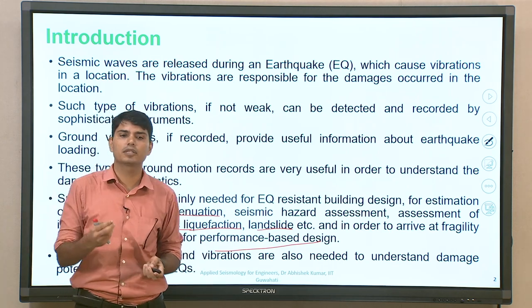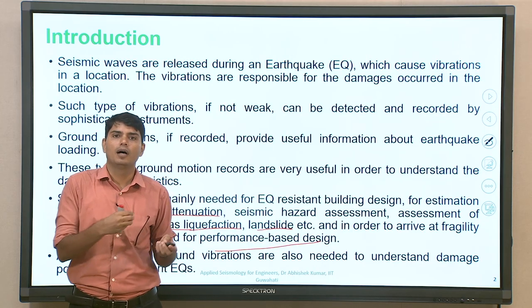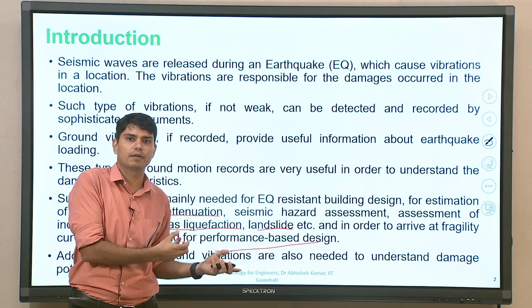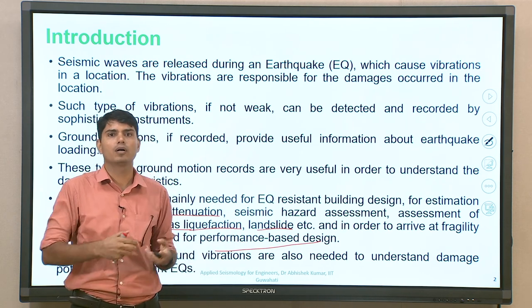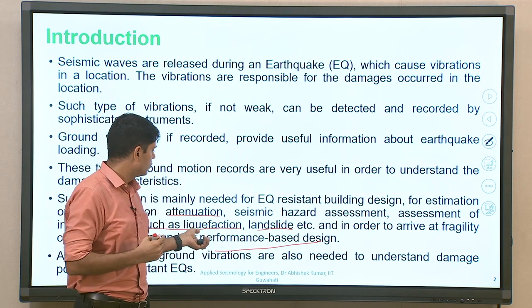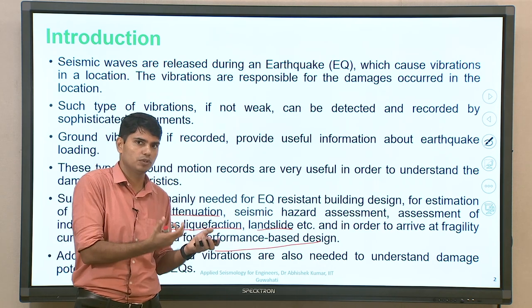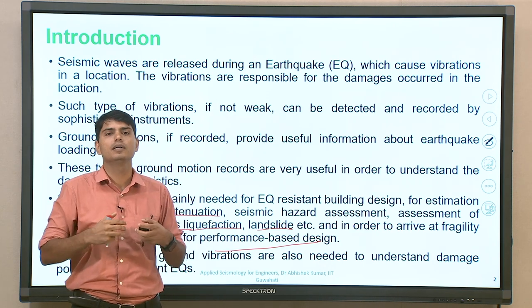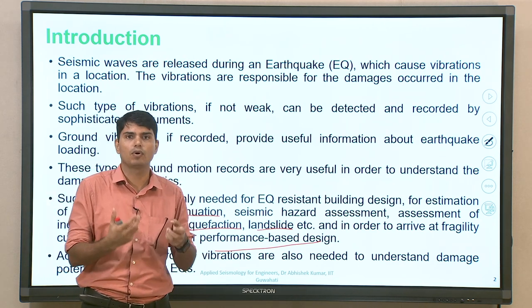Additionally, such ground motion can be used to understand the damage potential for future earthquakes, or to find out how damage during the 1905 Kangra earthquake, 1950 Assam earthquake, or 1934 Bihar-Nepal earthquake was triggered. If we have those recorded ground motions we can use them, but since we do not have them, we can take into account simulated ground motion to understand the damage characteristics.